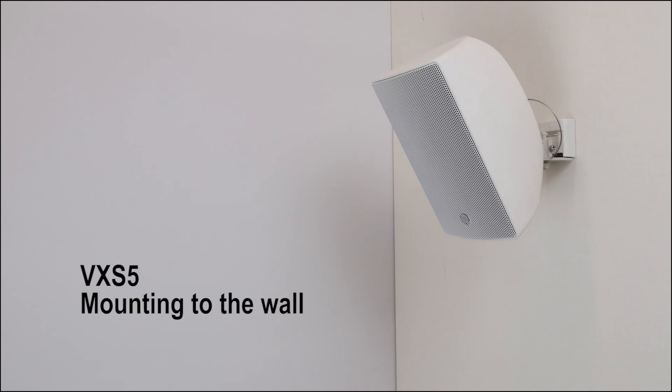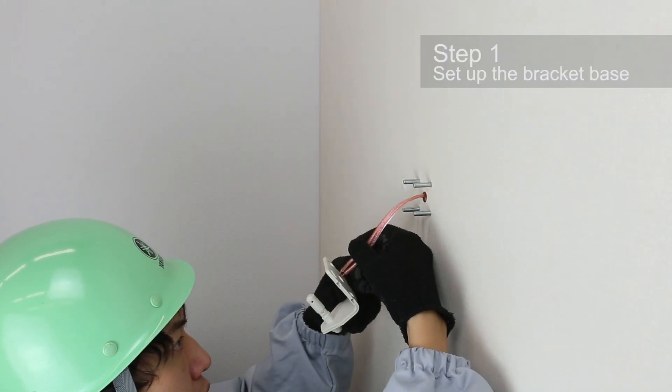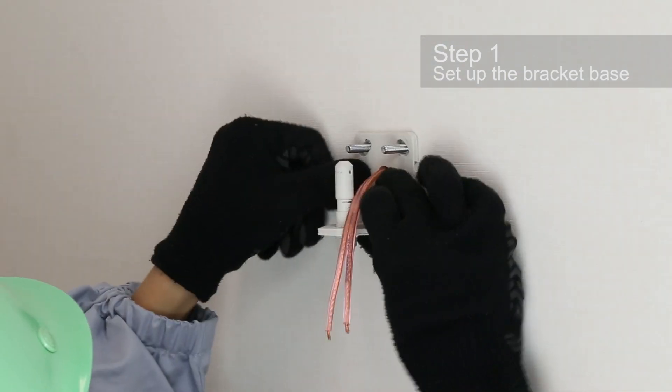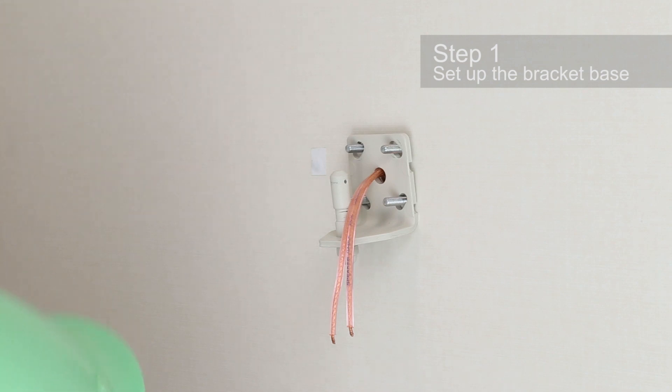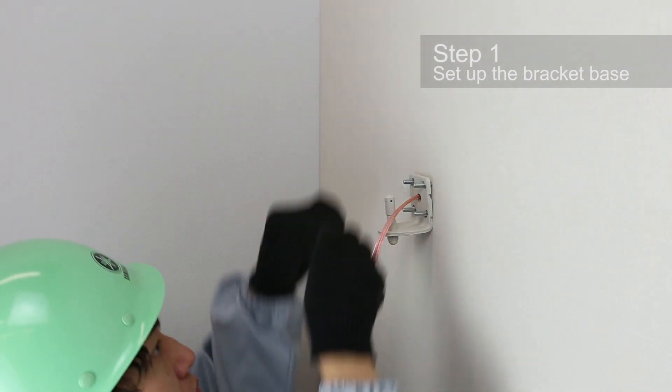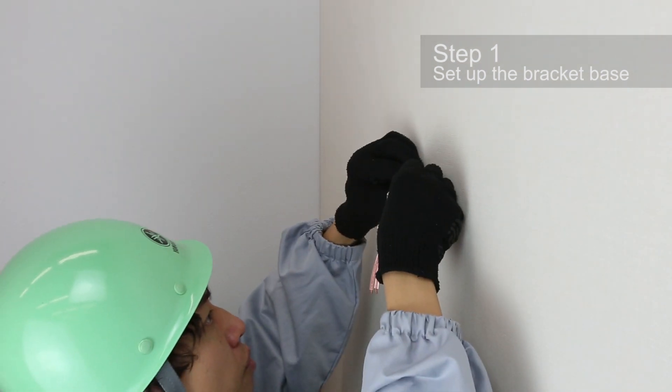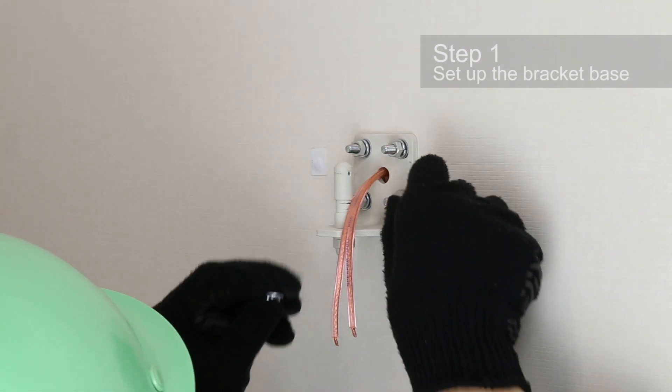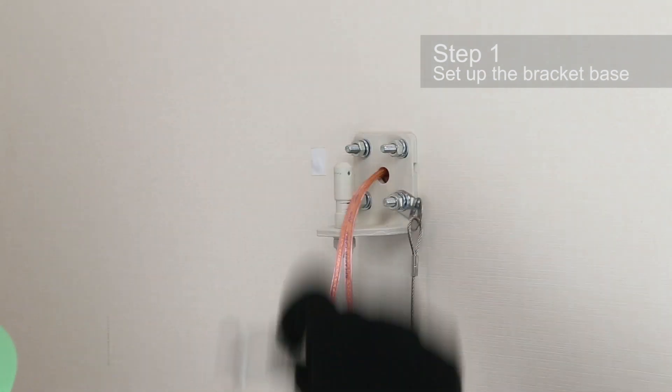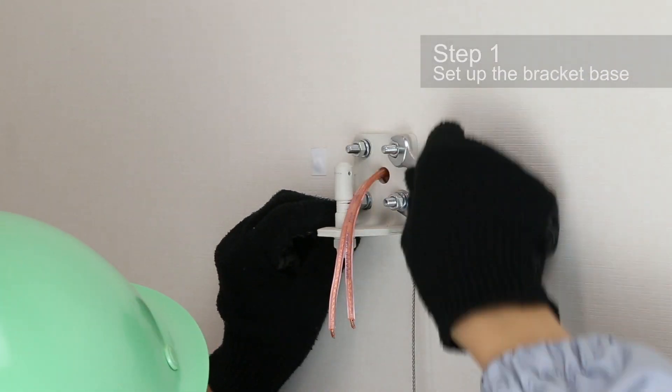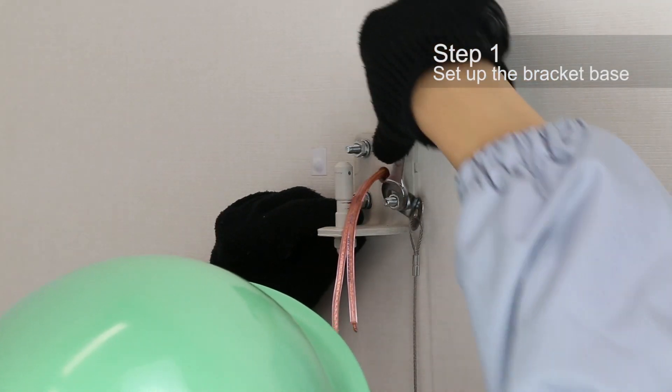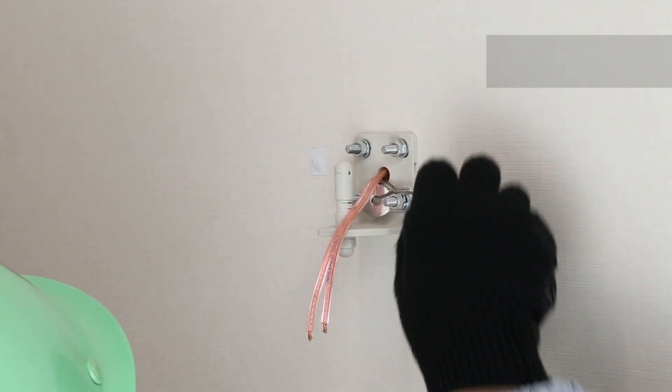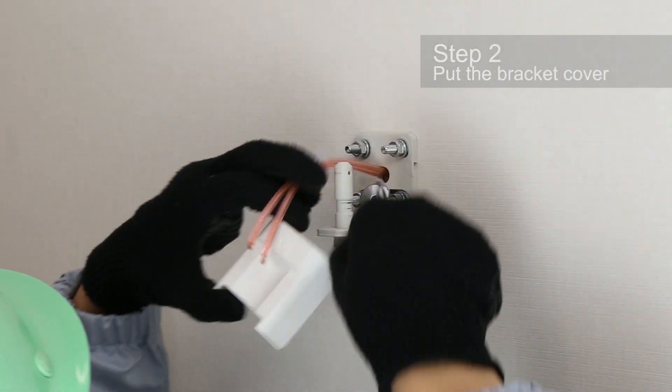Now let's mount the VXS5 to the wall. Firstly, install the bracket base to the wall. Attach the cover to the bracket base.